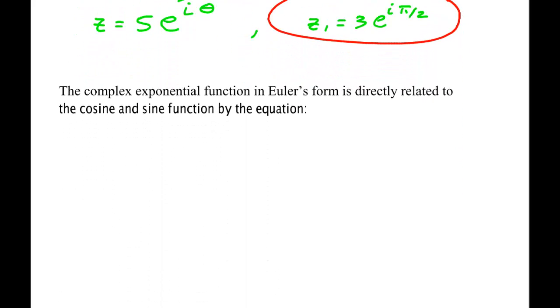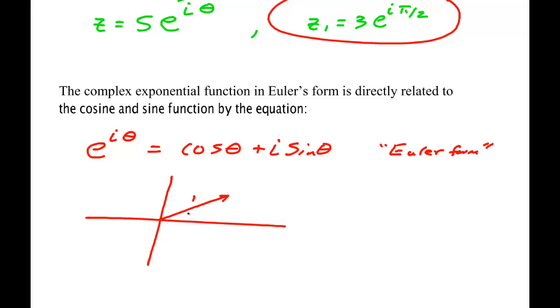Now, a complex exponential function in Euler's form is directly related to the sines and cosines by the following fact. e to the i theta is the cosine of theta plus i sine theta. This is known as Euler form for this particular thing. Let me show you what that says. It says that this is an arrow whose length is 1. This is the angle theta. This sine over here is the sine of theta. This is the cosine of theta. This is real. But the sine is along the imaginary part. That's how come it gets the i.